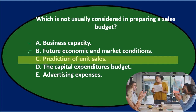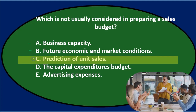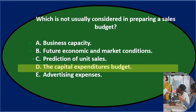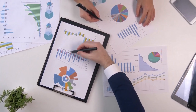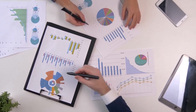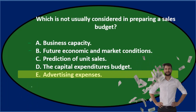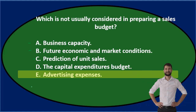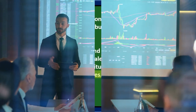D. The Capital Expenditures Budget — that's something we do later on. We need to know what our sales are before we do the Capital Expenditures Budget, not the other way around. So I would think that might be the one. E. Advertising Expenses — that's a bit tricky because advertising is related to what we think our sales will be. When we project units to sell in the future, we might have to consider advertising because it could affect our sales amount.